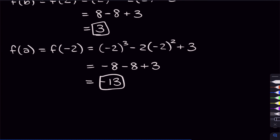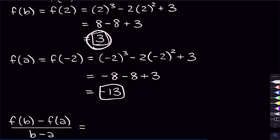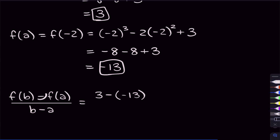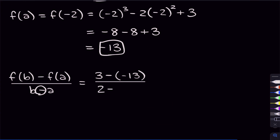Now we have everything to find the average rate of change. f(b) is three and f(a) is negative 13. Remember there are two negatives in f(b) minus f(a) since f(a) is negative — so three minus negative 13 becomes three plus 13. The same applies to b minus a: b is two and a is negative two, so two minus negative two becomes two plus two. That gives us 16 over 4, which equals four — that's our answer for the last problem.